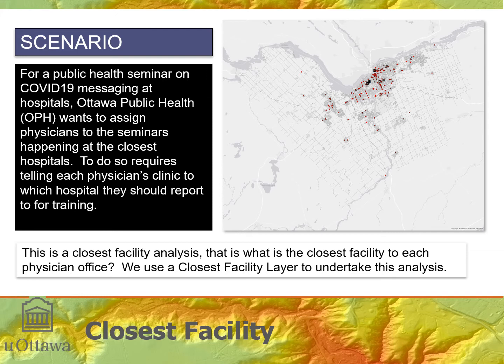The first example with the driving network is a closest facility analysis for a public health seminar on COVID-19 messaging at hospitals. Ottawa Public Health wants to assign physicians to seminars held at hospitals, assigning physician offices according to the closest hospital location. Each physician has to be assigned to the closest hospital in terms of travel time. To do this we need to know the physician locations and hospital locations, as shown on the map.